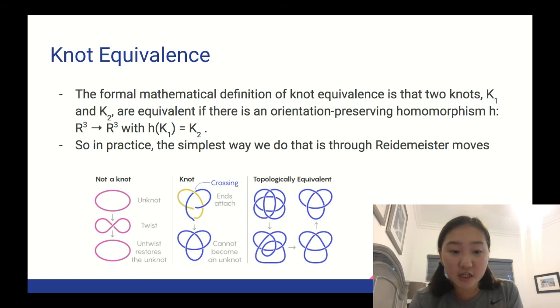The formal definition of knot equivalence is that two knots, K1 and K2, are equivalent if there is an orientation-preserving homeomorphism, H, from R3 to R3 with H acting on K1 equals K2. So basically, the most common method for determining knot equivalence is using Reidemeister moves, which I'll talk about on the next slide.